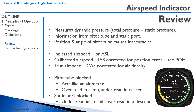It suffers from position and angle inaccuracies. The indicated airspeed is what's measured on the airspeed indicator. The calibrated airspeed is indicated airspeed corrected for position error — look at the pilot operating handbook for the correction. True airspeed is the calibrated airspeed corrected for air density.